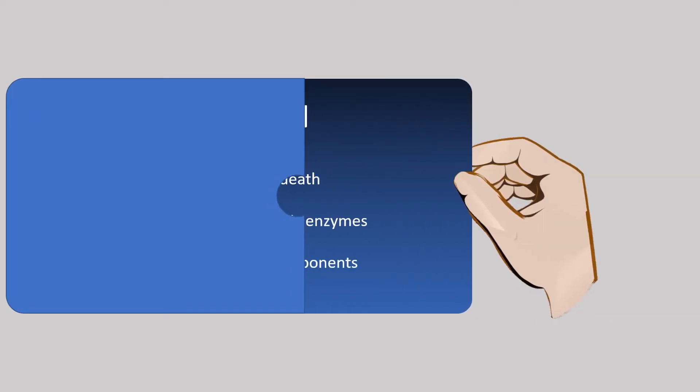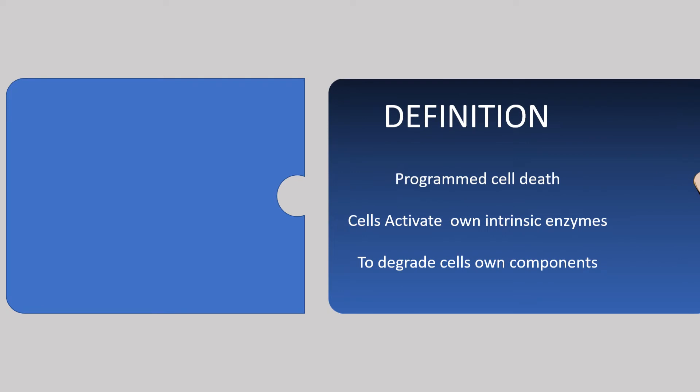So, how to define apoptosis? Apoptosis is programmed cell death, in which the cell's own enzymes are activated to degrade the cell's own components: the DNA, nuclear and cytoplasmic proteins.